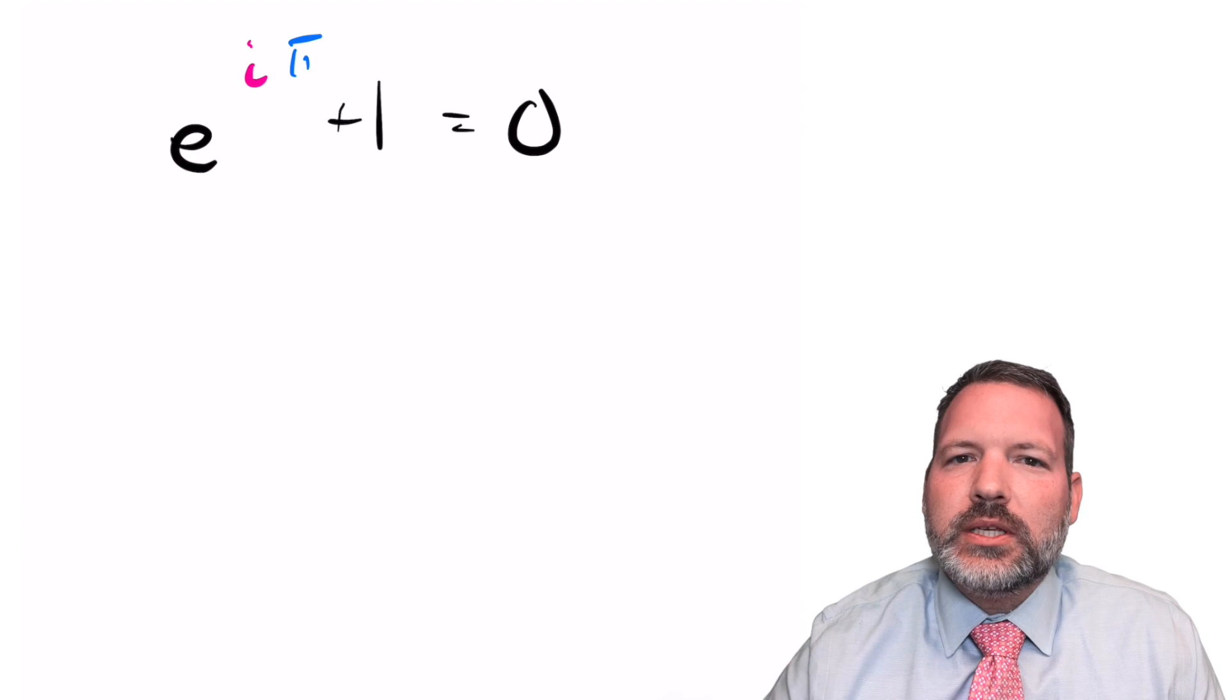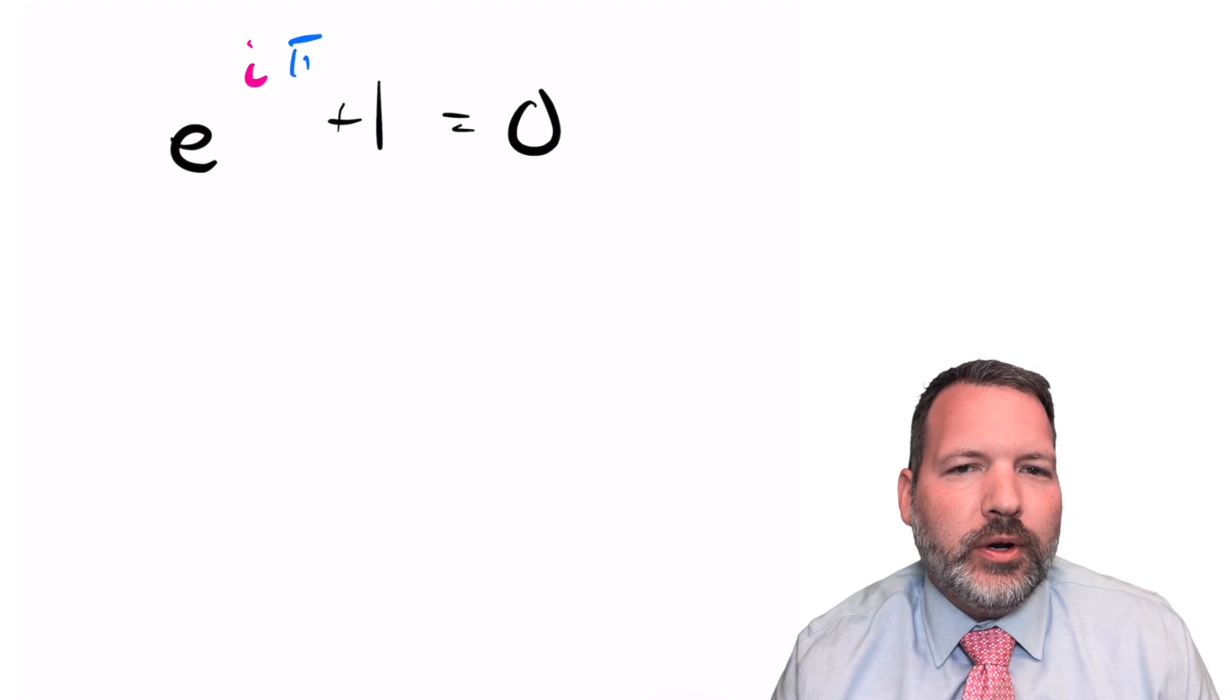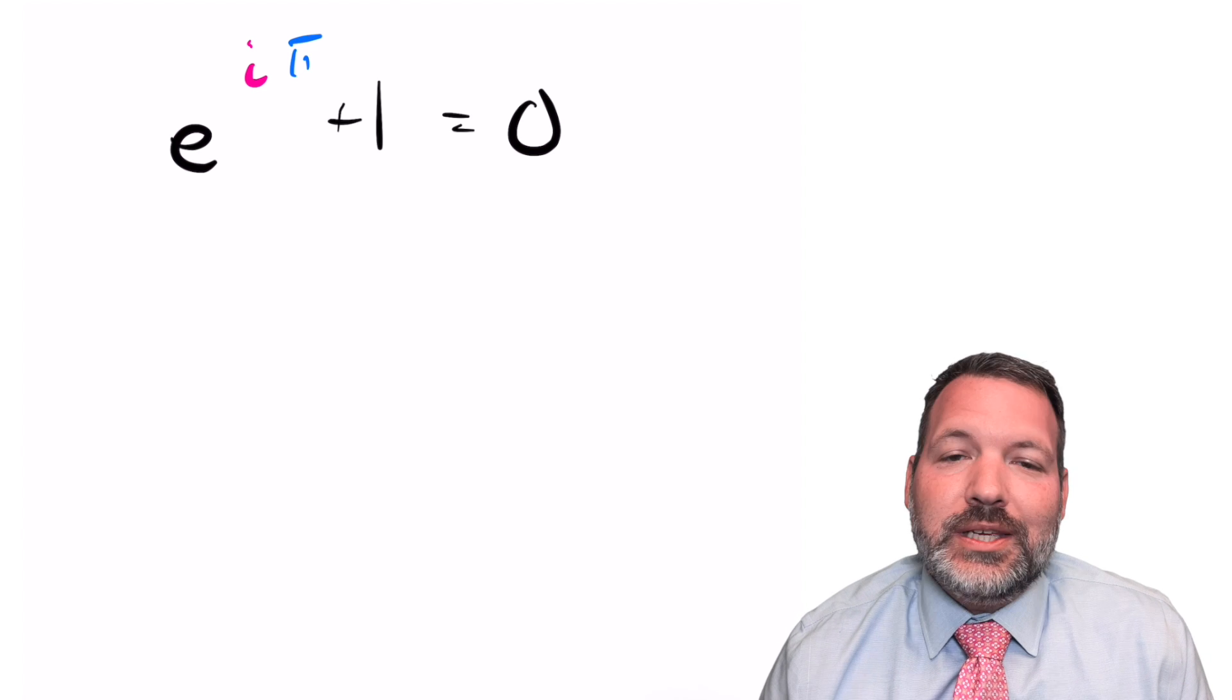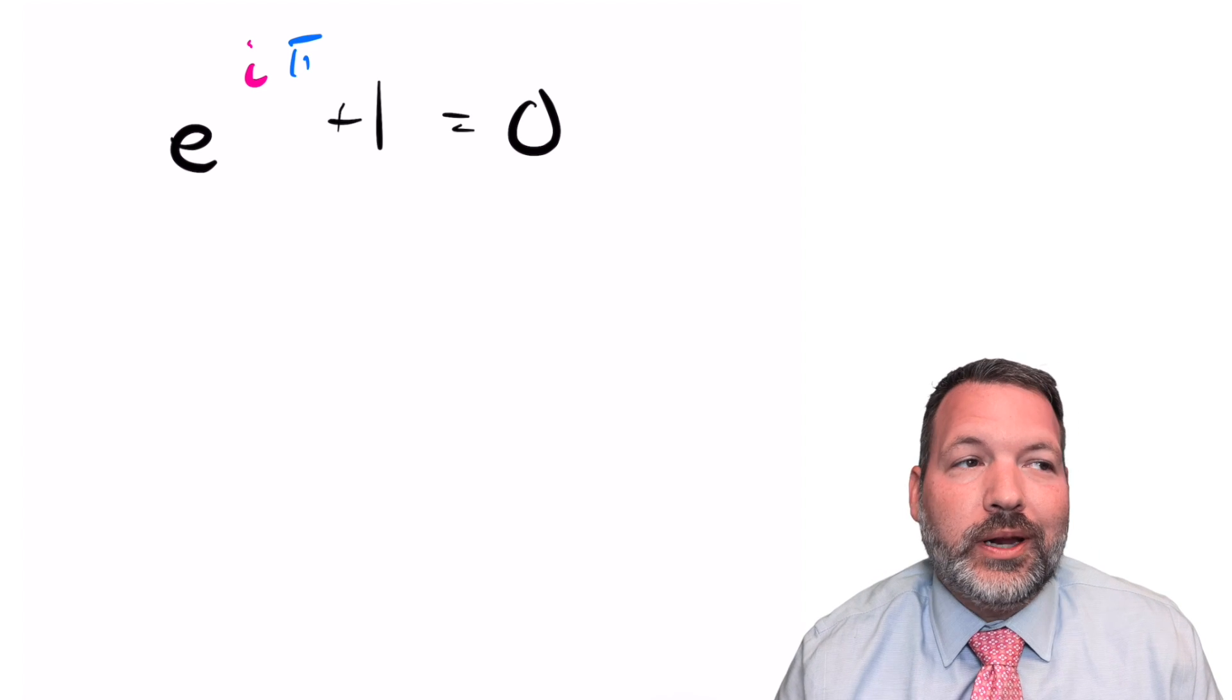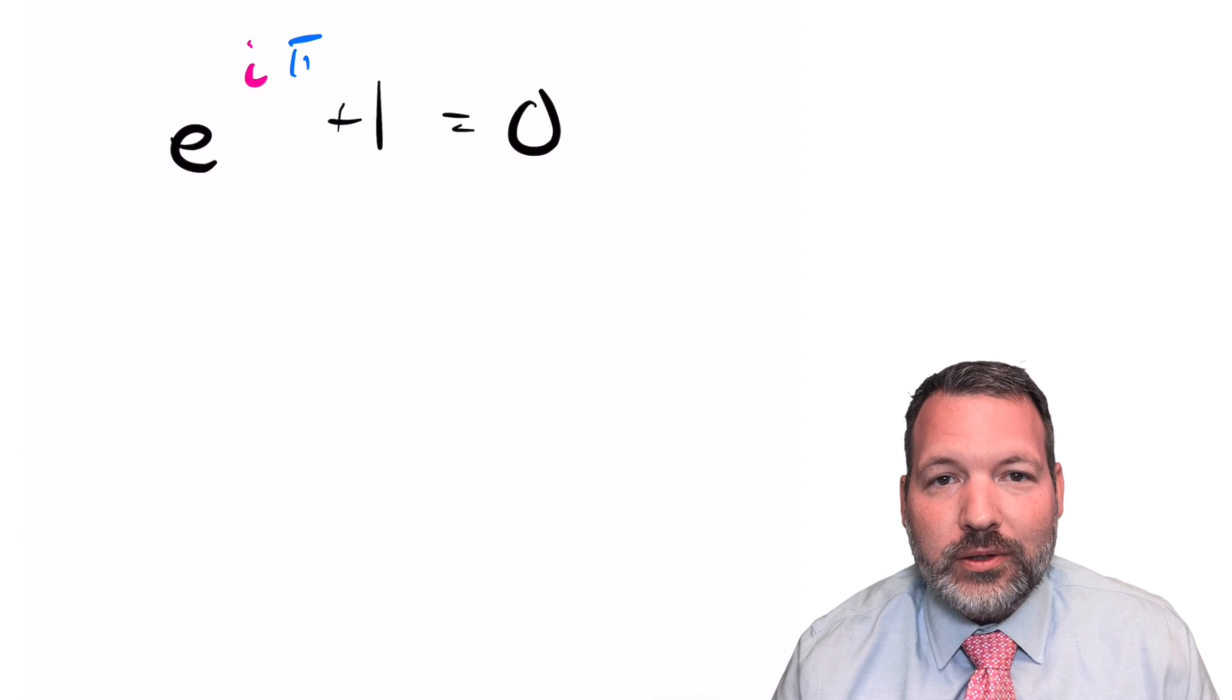One of course inaugurates the number system. That's where we start our counting numbers or natural numbers. The recognition of zero both as a number and then even more importantly later on as a digit was huge for mathematical development.